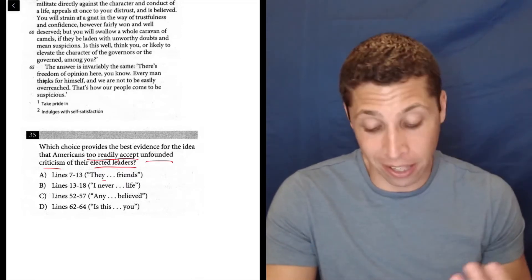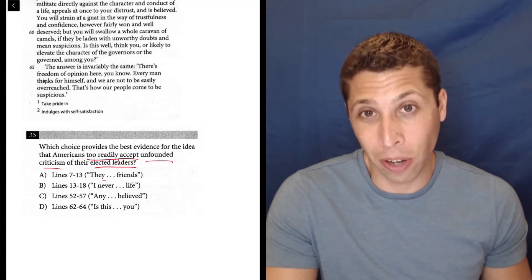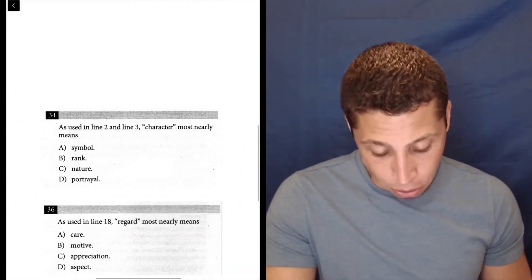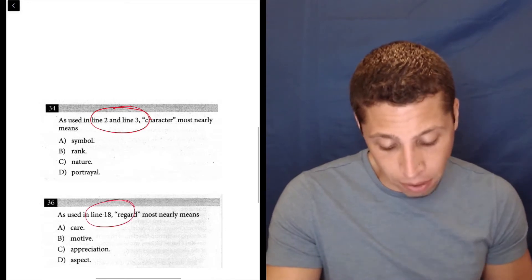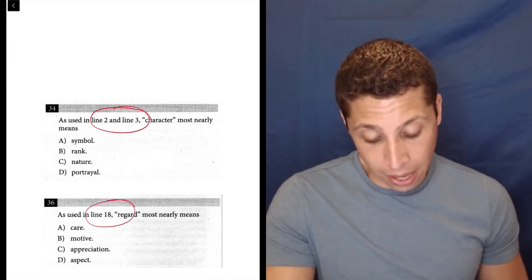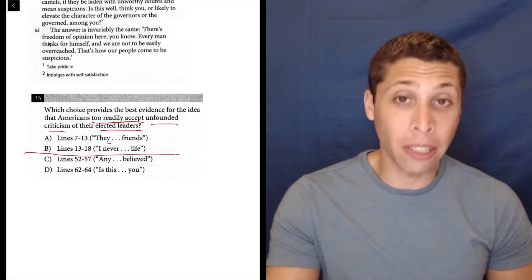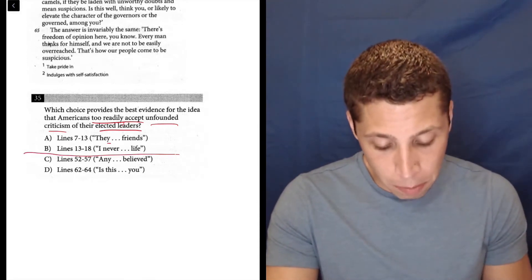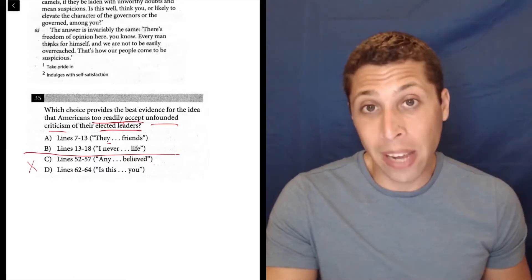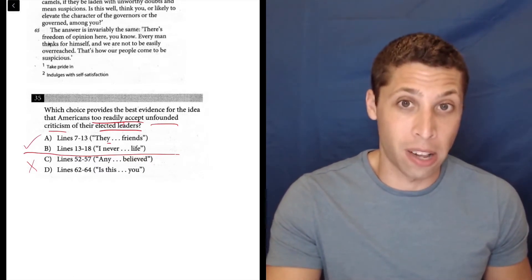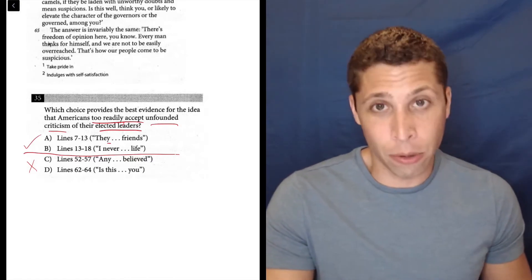One thing you can do here is use the chronology rule to try to narrow your focus. If we look at the surrounding questions, 34 and 36, we have some clear line references, 2 and 18. We would expect that these choices would be out of the chronology, so they'd be wrong, and one of these two would be right because they're within the chronology.